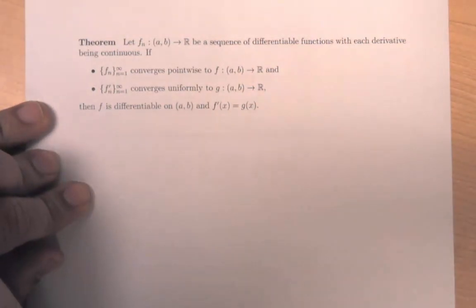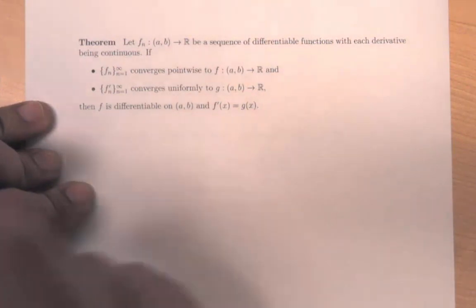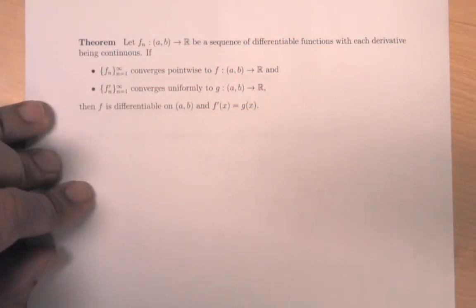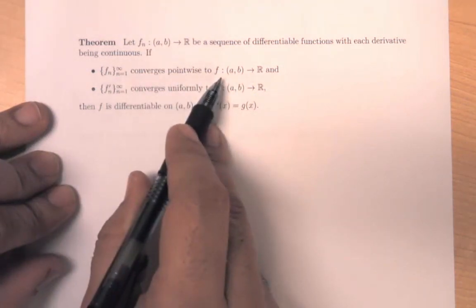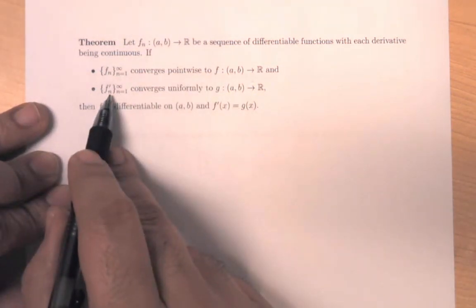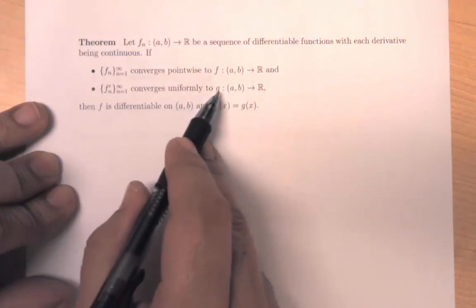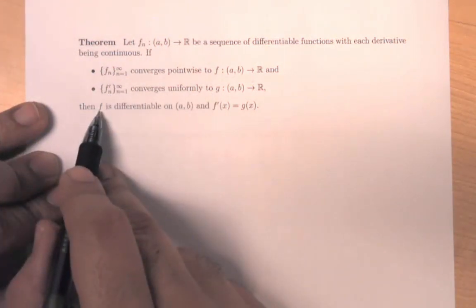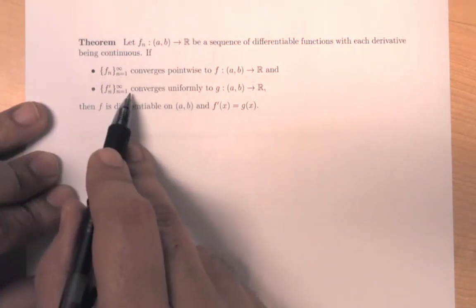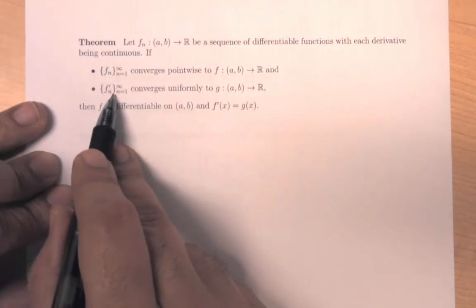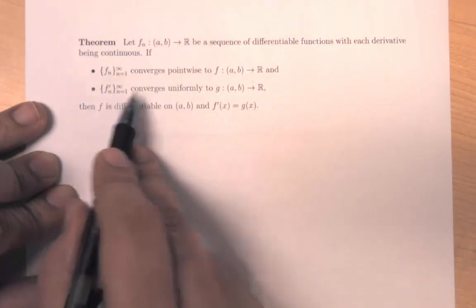Now let's consider differentiation and a sequence of functions. Suppose f_n is a sequence of differentiable functions and each derivative is continuous. Then if f_n converges pointwise to f and the derivative sequence converges uniformly to g, then f is differentiable and the derivative of f is given by the limit of the sequence of derivatives — that is, g.